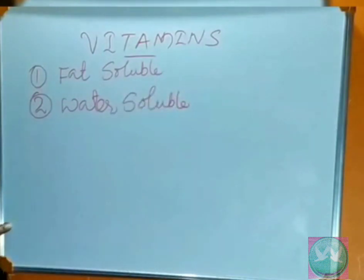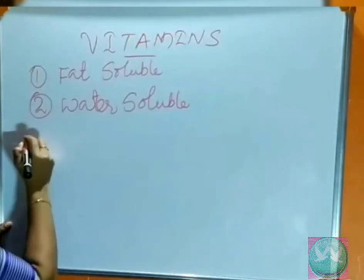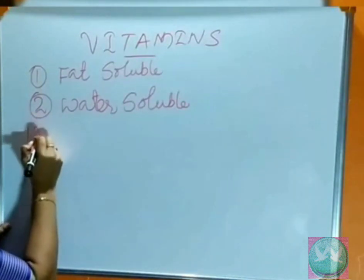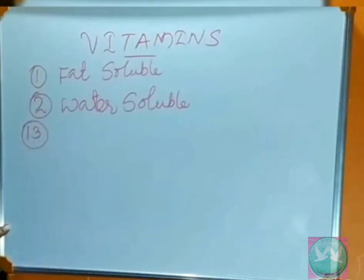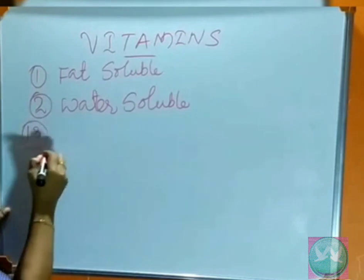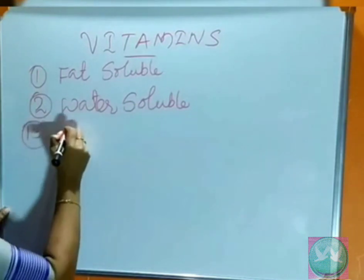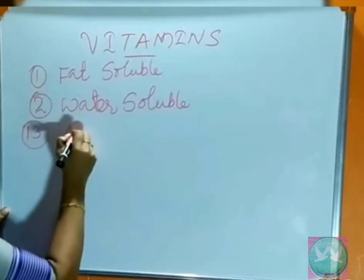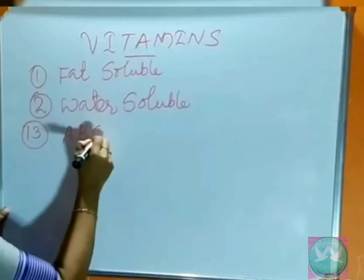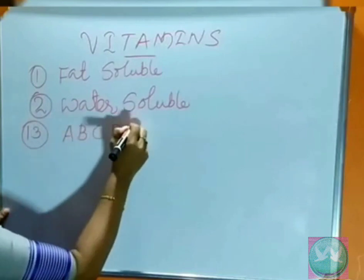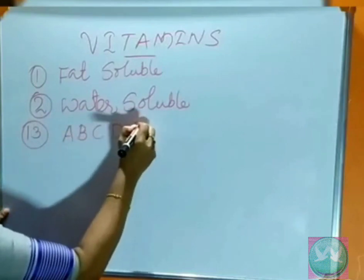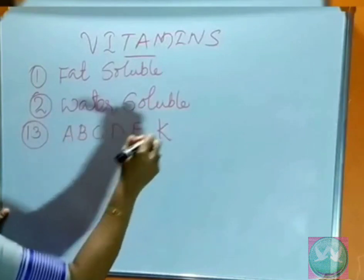Do you know how many types of vitamins are there? There are a total of 13 vitamins. What are they? That is A, B, C, D, E, and K.